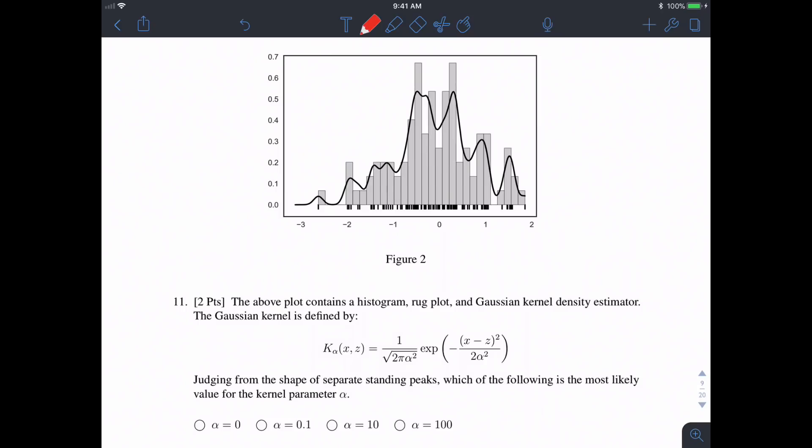Lastly, at number 11, we're given a histogram and a KDE, and we're given the equation for a KDE, and we're told to estimate the most likely value for the kernel parameter alpha. Remember, alpha tells you how smooth your KDE function is.